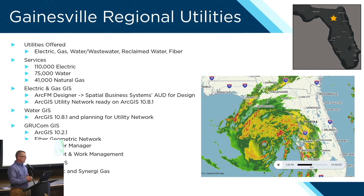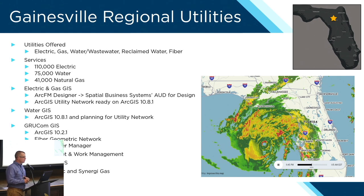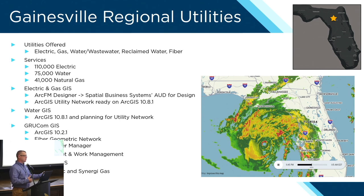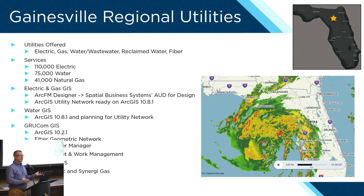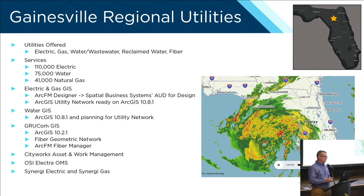Electric and gas went from 10.2 to 10.6 to 10.8 during this whole strategic plan — they should be at 10.8 now. Water jumped to 10.8 a little earlier. GRUCOM, the fiber side, is still at 10.2.1 and is trying to upgrade to utility network. For work and asset management they use CityWorks and OSI Electra as their OMS, and for analysis they use Synergy Electric and Synergy Gas.